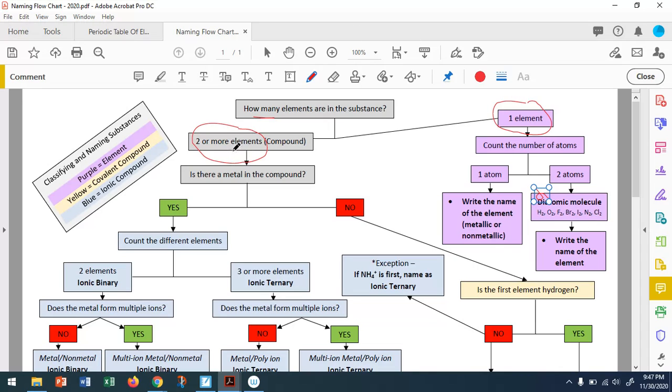If I have two or more elements, then I'm dealing with a compound. And a compound is going to be a little bit more complex. To decide what type of compound I have, you'll notice that I care if there is a metal present. If there is a metal, a metal means I have an ionic compound. If there is no metal in the compound, then I am dealing with the yellow category, the covalent compounds.